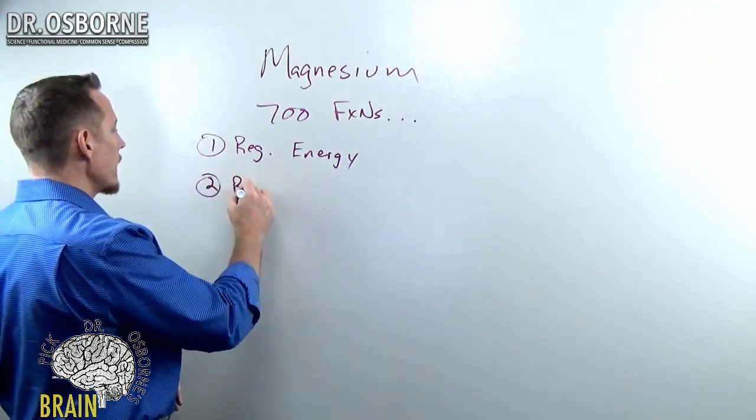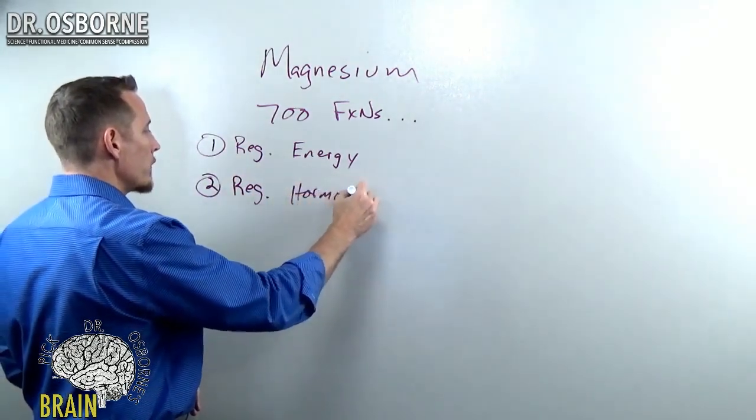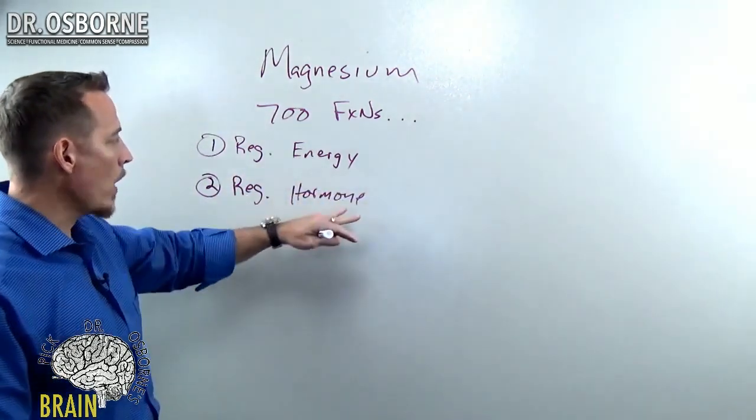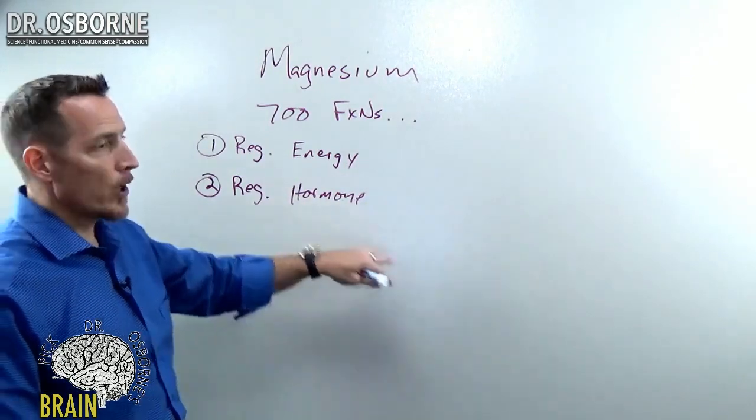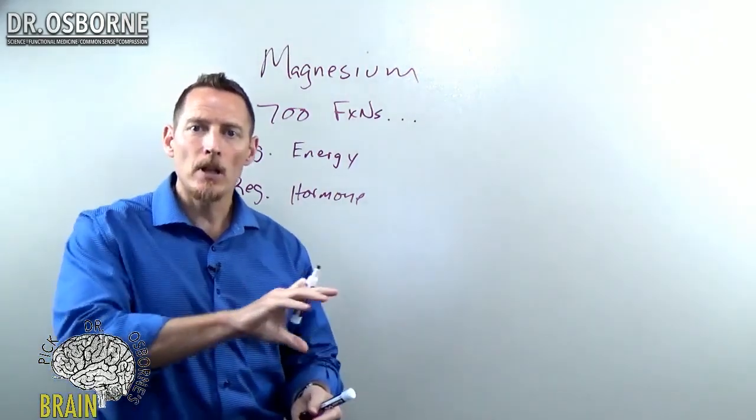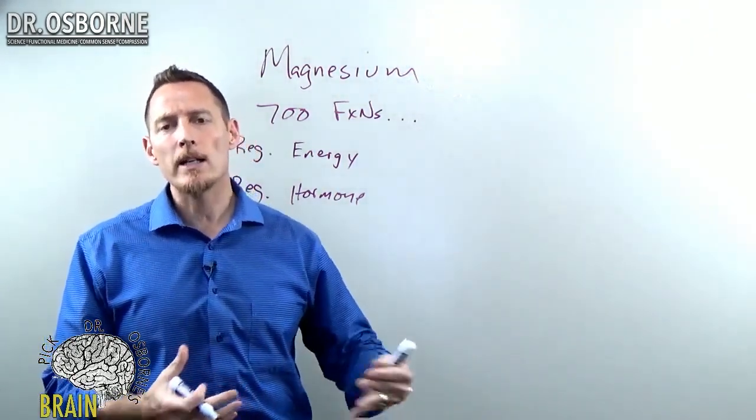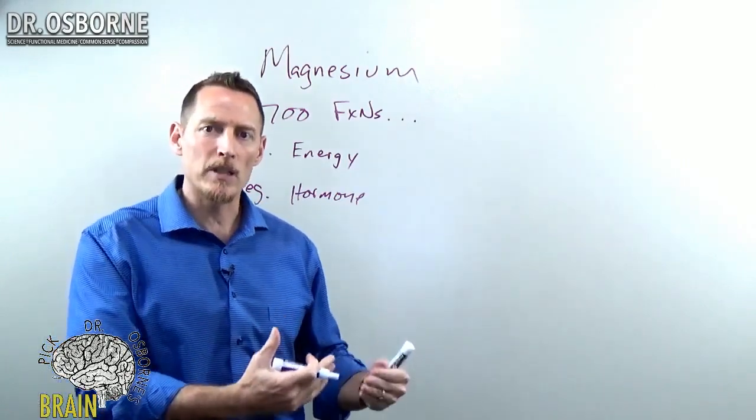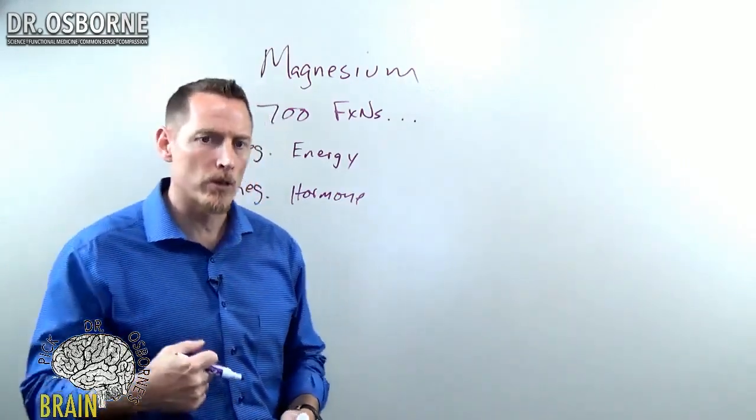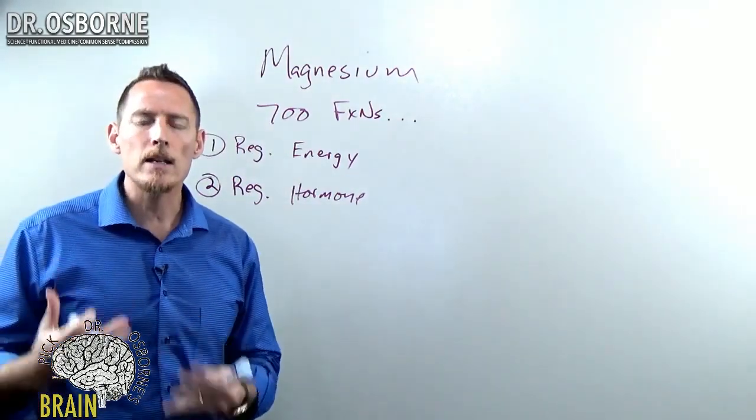Now magnesium also regulates hormone production. For example, women, you can't make progesterone without magnesium. Estrogen, you can't metabolize it properly without magnesium. If you don't have adequate magnesium, then your body can actually build up toxic metabolites of estrogen that can increase your risk of cancer. Men, you can't make testosterone without magnesium.